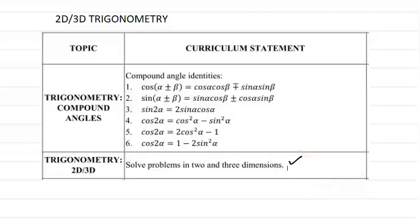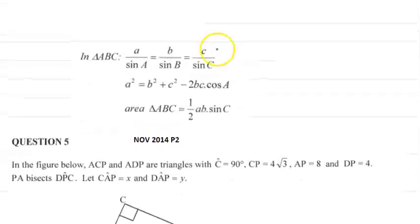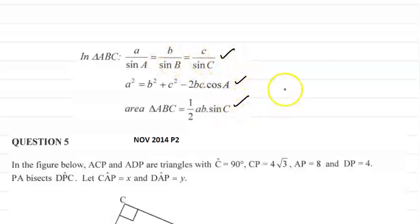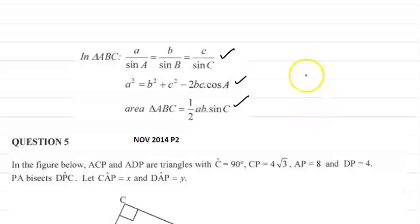This is a screenshot from your formula sheet. This here is the sine rule, that's the cosine rule, and this is the area rule. These three rules are designed for us to solve for a side or an angle, or find the area of a non-right angle triangle. Remember that whenever we have a right angle triangle we will use our trig ratios — sine, cosine, and tan — to solve for a side or an angle.